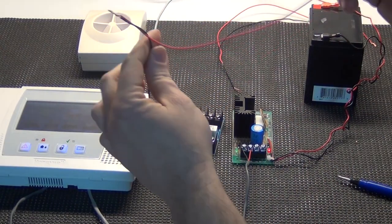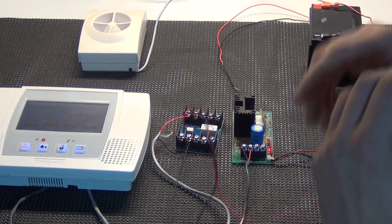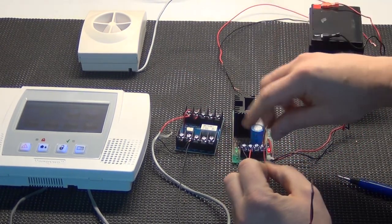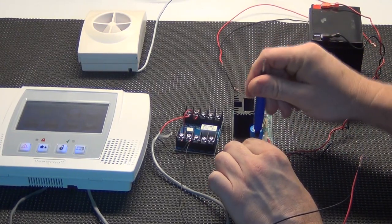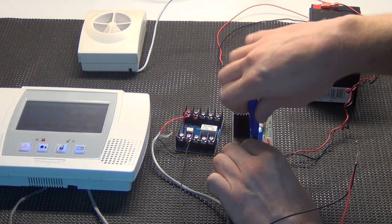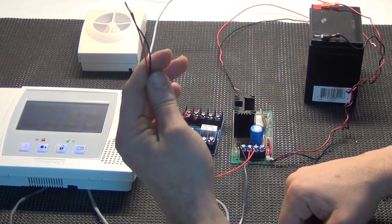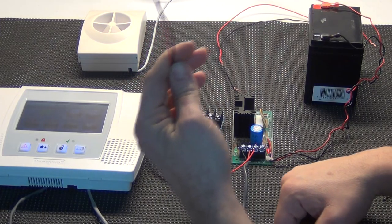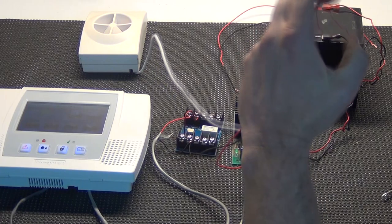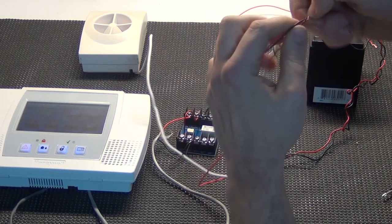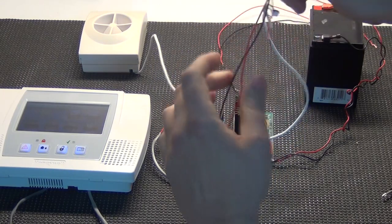Now this other wire that I've got attached on here we're going to run to the negative DC output on the power supply. Put that here and then tighten that down. This end that we have left over is going to go to the negative siren wire. So we'll just take this end and wrap it in with this siren wire. And that's done.